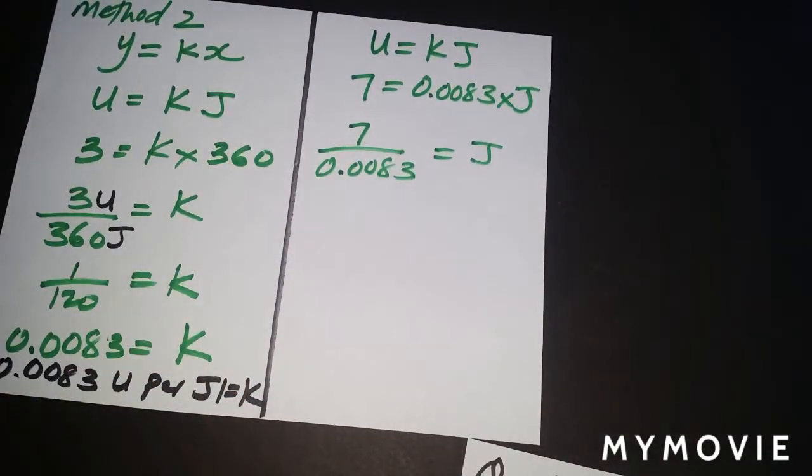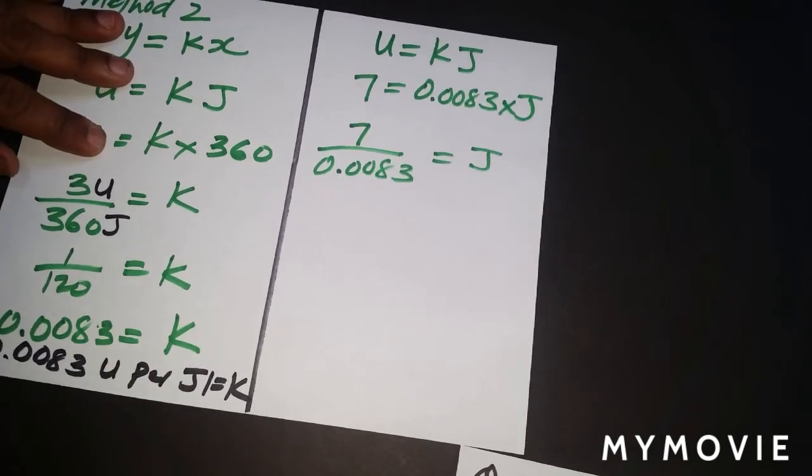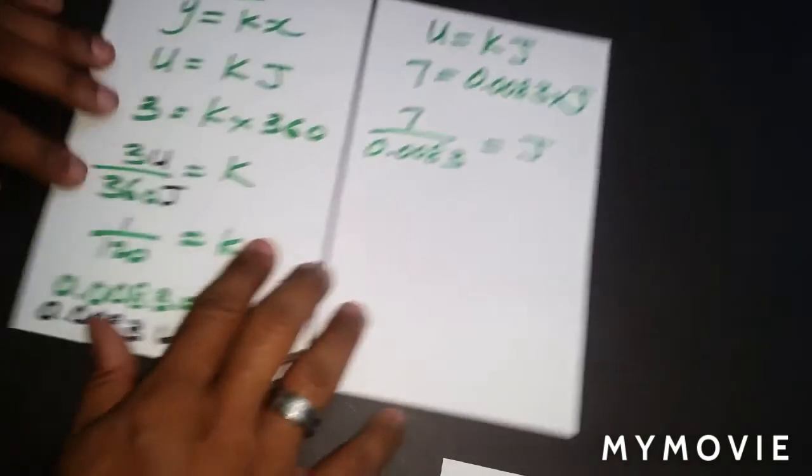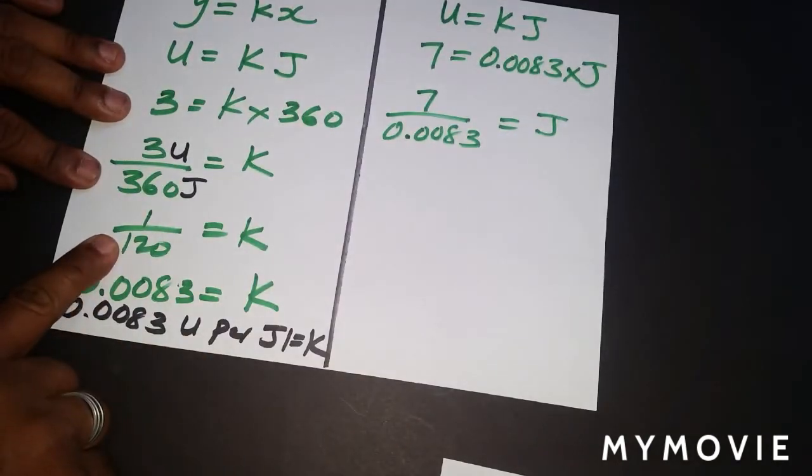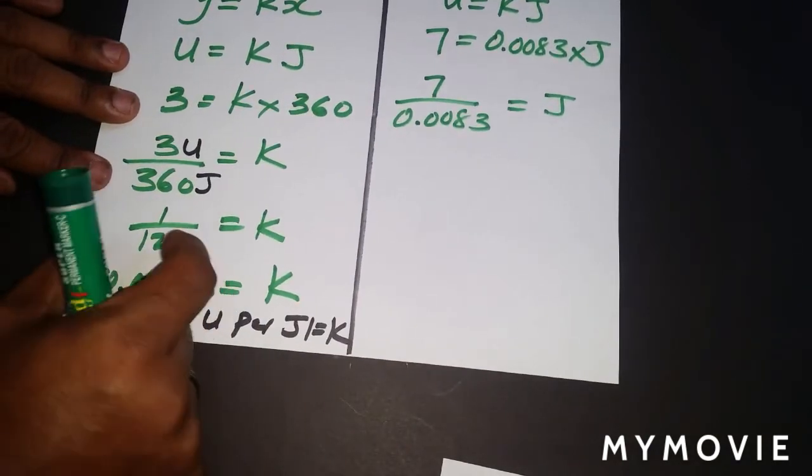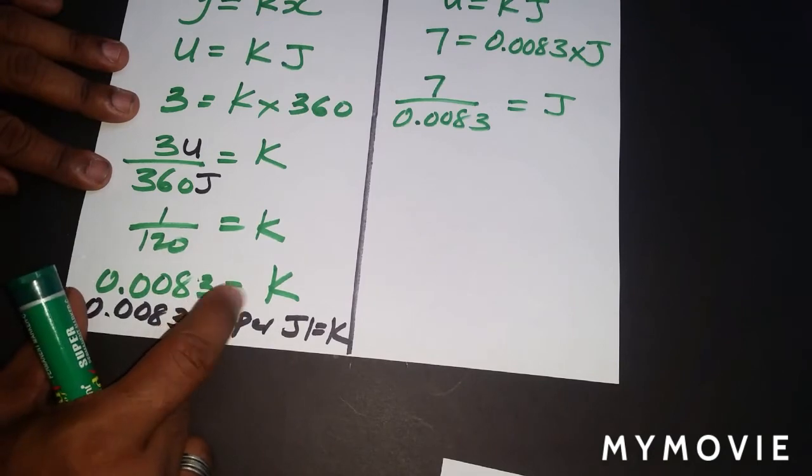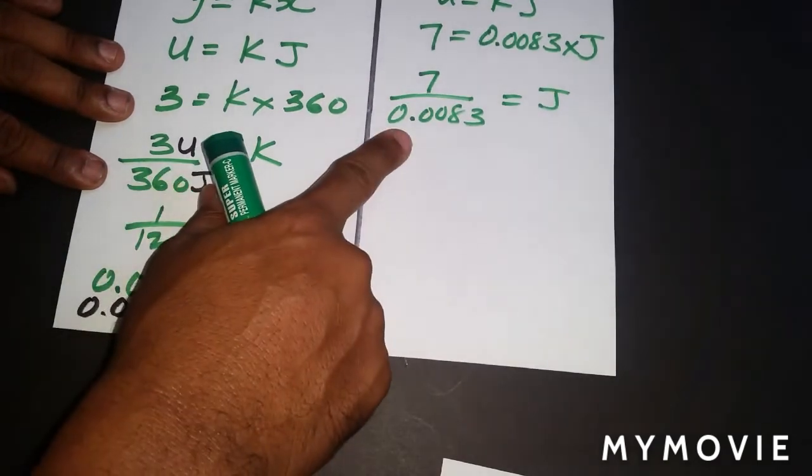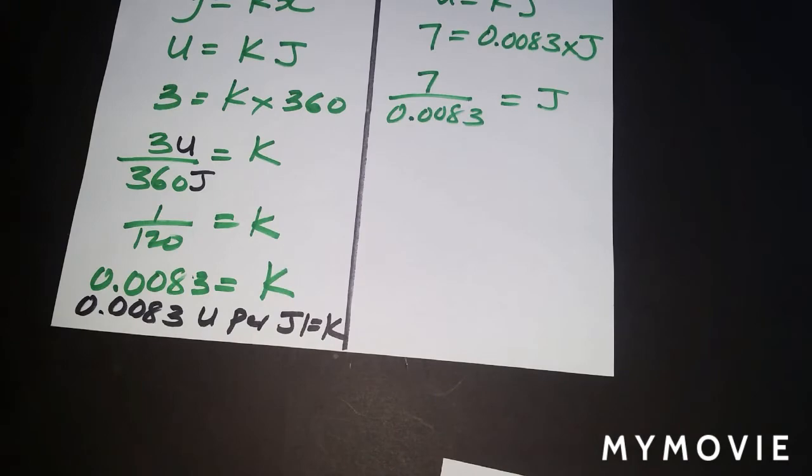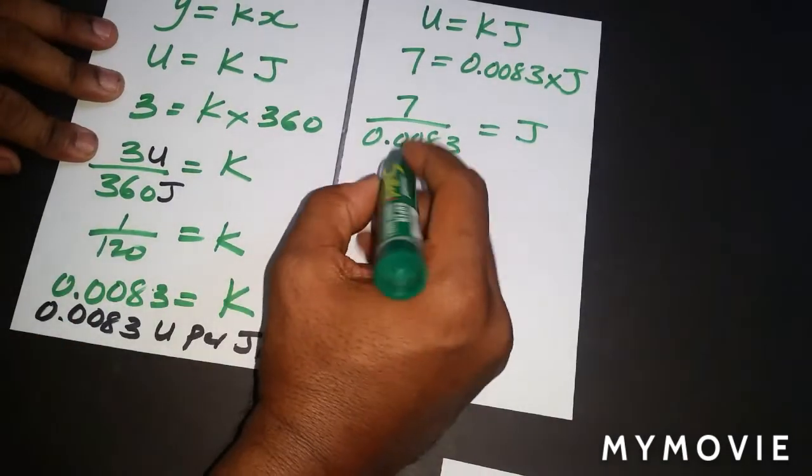Let's just divide the 7 by this and see what we get. So 7 divided by 0.0083 gives us a value of, in this particular case, 843, which is a little bit more than what we'd have here. But it's because of the decimal. If we had used this, it would have been more accurate, which is why I keep saying fractions are better to use than decimals sometimes.